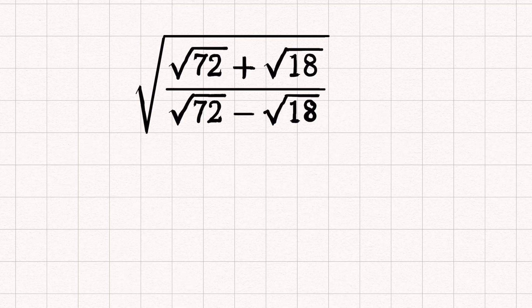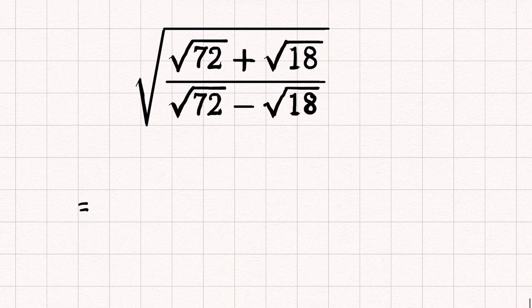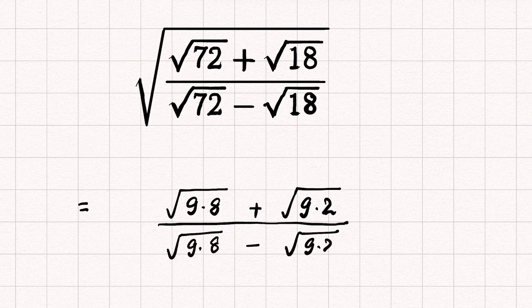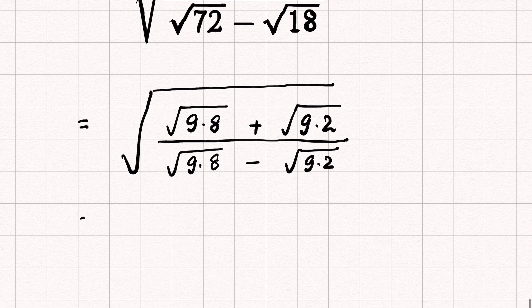We need to simplify the expression: square root of (72 + √18) divided by (√72 − √18), all under a square root. We can write 72 as 9 times 8, and 18 as 9 times 2. So the expression becomes: square root of (9×8) plus square root of (9×2), upon square root of (9×8) minus square root of (9×2), all under square root.